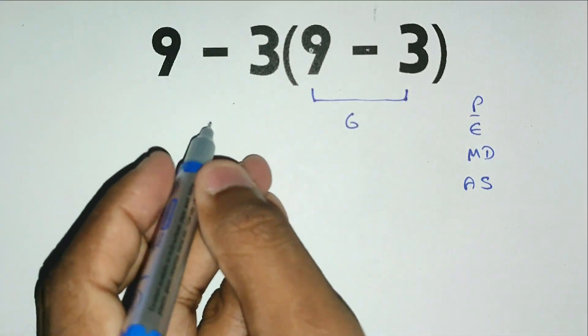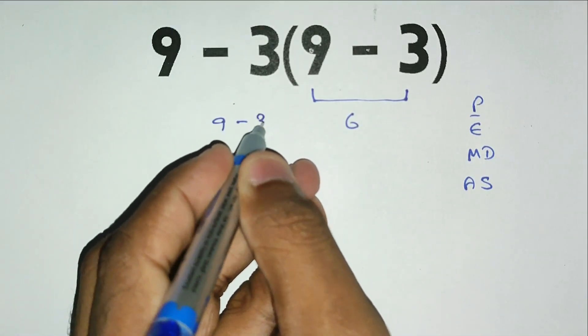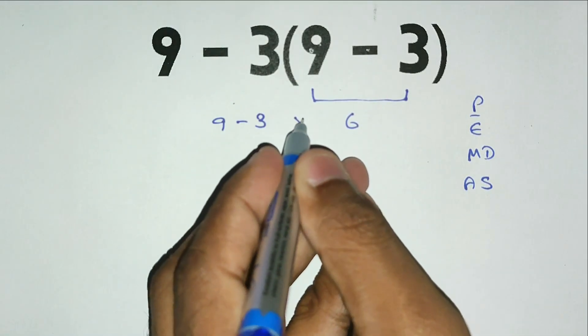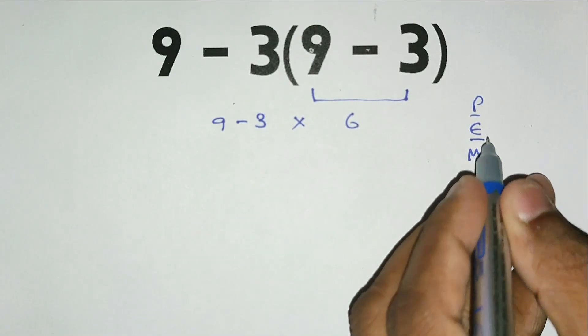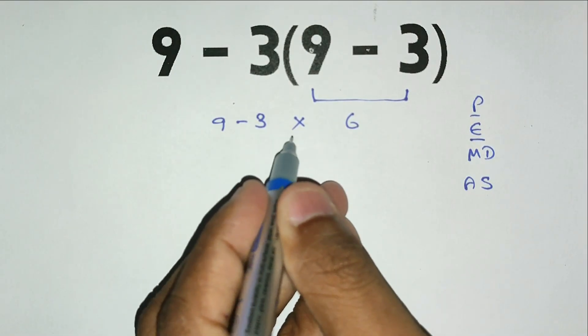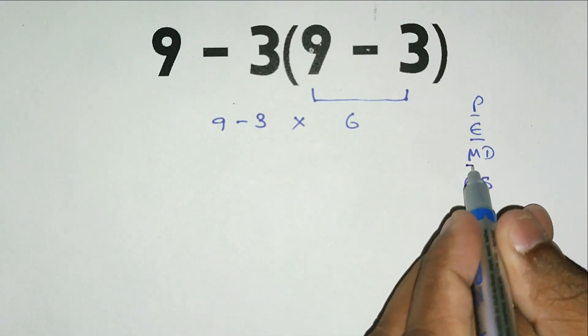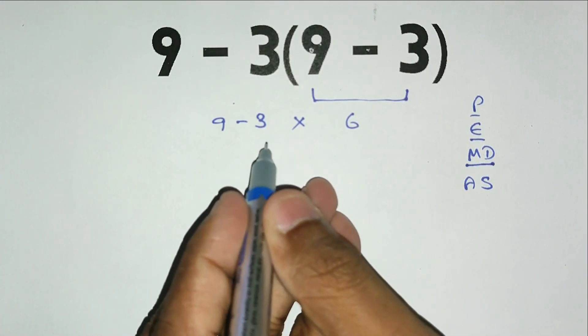Next we look for exponents, but there are none in this expression. Then we handle multiplication and division, and here we have multiplication. 3 times 6 is 18.